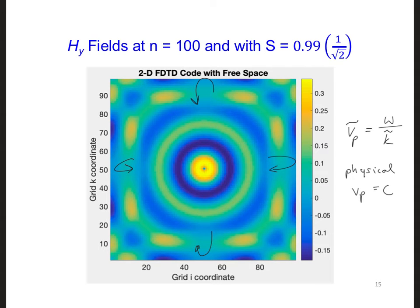So a question is, when our wave is propagating outward from the source in this two-dimensional grid, are we getting a phase velocity close to the speed of light?